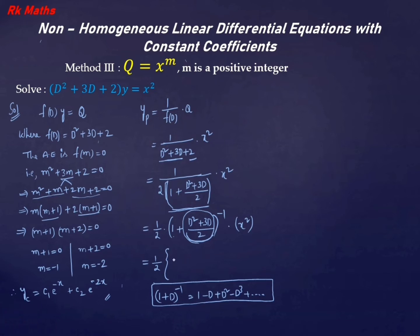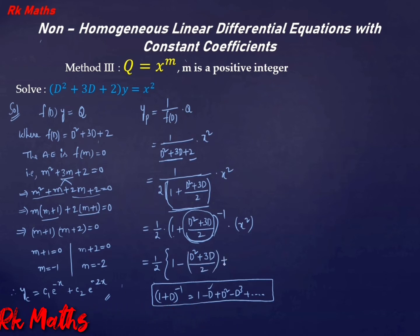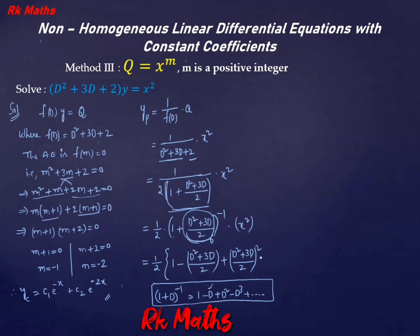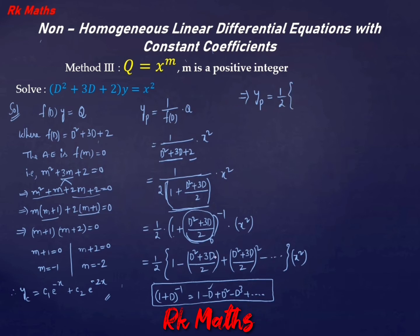So with the (1 + D)⁻¹ expansion: 1 minus [D² + 3D by 2], plus [D² + 3D by 2]² term, minus D³ term, into x². That implies yₚ = (1/2) into the bracketed expression applied to x².